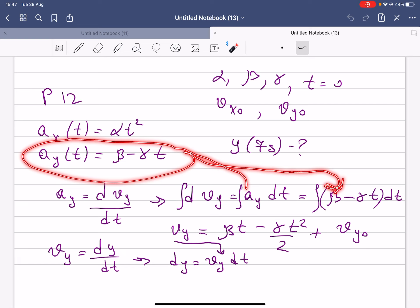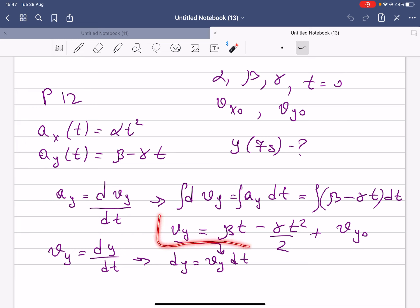By doing so, we integrated both sides, and then after that we get vy is equal to beta t minus gamma t squared over 2 plus c constant, which is vy initial. So just remember this one.